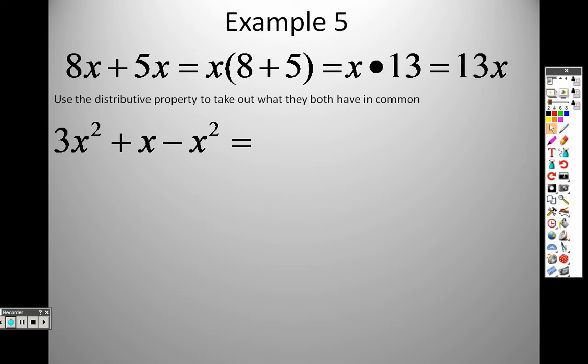Down here, with this example, we can just combine together what is the same. And what you need to realize is x squared and x are not the same thing. These two items are not the same. I cannot put an x squared and an x together. But, over here I have a negative 1 x squared and I have a 3 x squared, so I can combine those two items. A 3 x squared minus 1 x squared is 2 x squared. There is nothing else that combines with that x, so I just bring the x along for the ride.